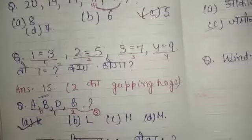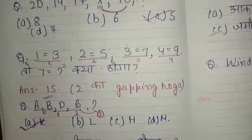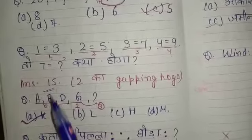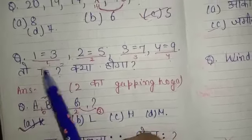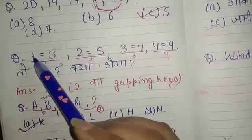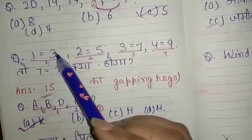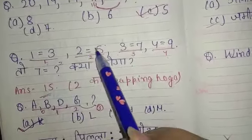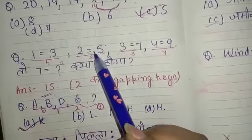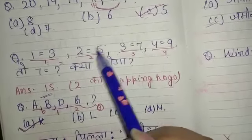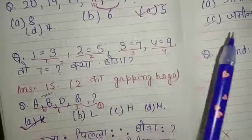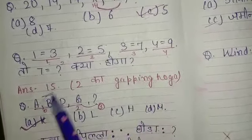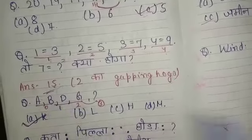So 7 will be 15. How? Look, the gap here is 2 — 1 plus 2 equals 3, 2 plus 2 equals 5, and so on. Following this pattern, 7 will be around 15.